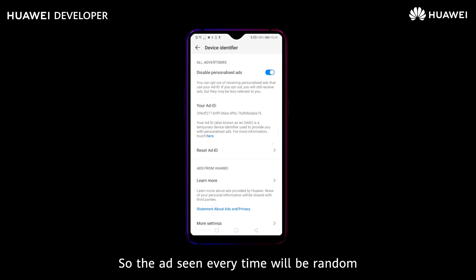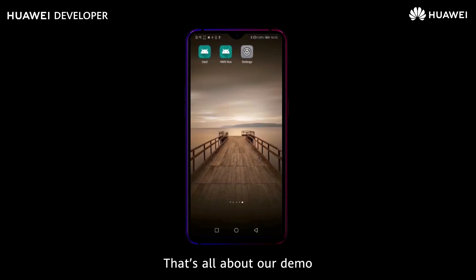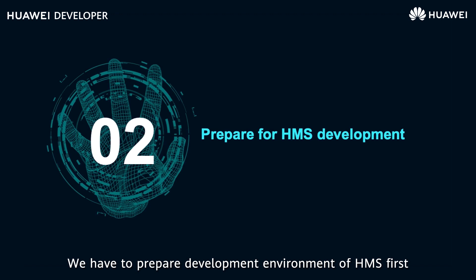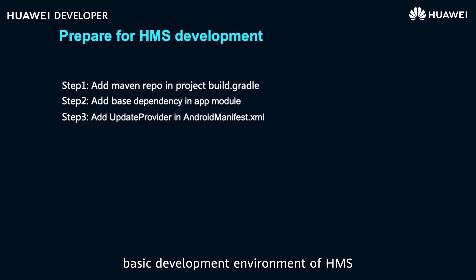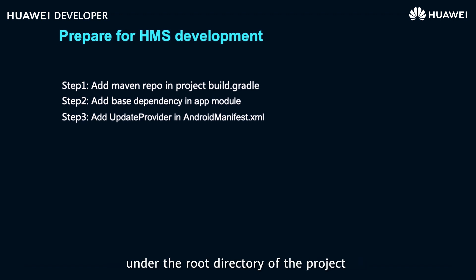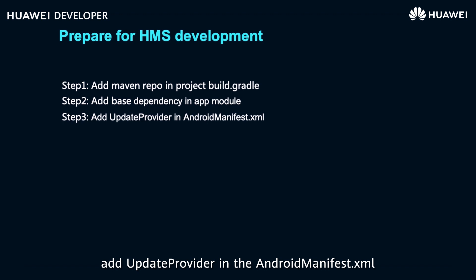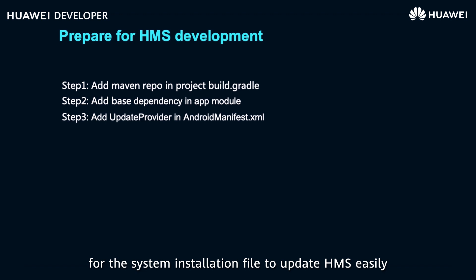That concludes the demo. Next we enter the development steps. Before official development starts, we need to prepare the HMS development environment. There are only three steps: first, add the Maven repository in the build.gradle under the root directory of the project to easily find HMS dependency packages; second, add the basic dependency package in the app module; third, add the update provider in AndroidManifest.xml so the system installation file can update HMS easily.